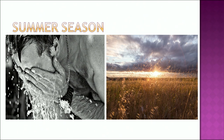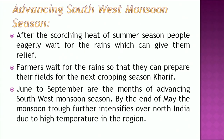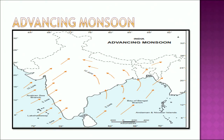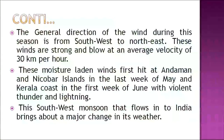After the scorching heat of summer, people eagerly wait for the rains. Farmers wait so they can prepare their fields for the Kharif cropping season. June to September are the months of the advancing southwest monsoon season. By the end of May, the monsoon trough further intensifies over north India. The general wind direction during this season is from southwest to northeast, with winds blowing at an average velocity of 30 km per hour. These moisture-laden winds first hit the Andaman and Nicobar Islands in the last week of May and the Kerala coast in the first week of June with violent thunder and lightning.